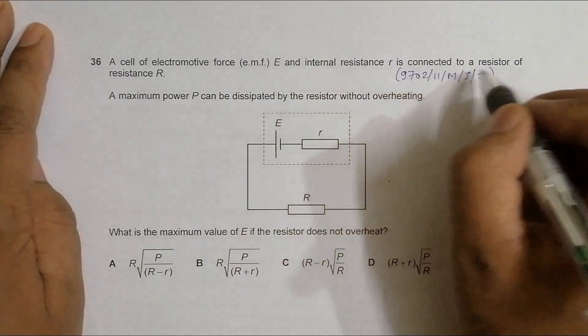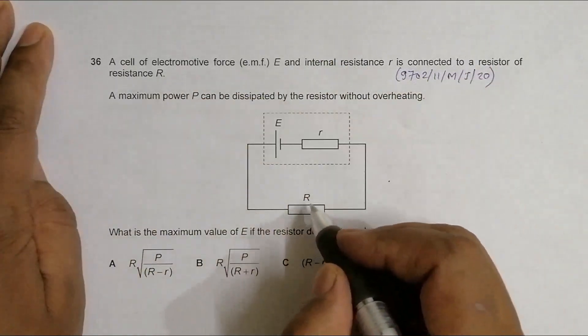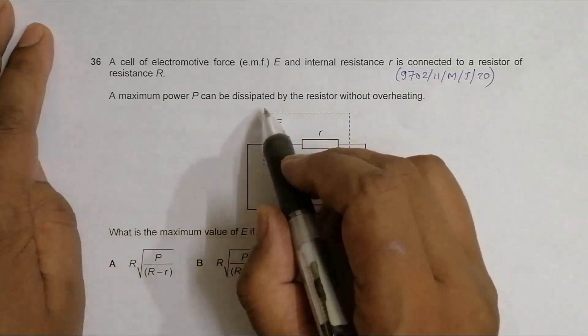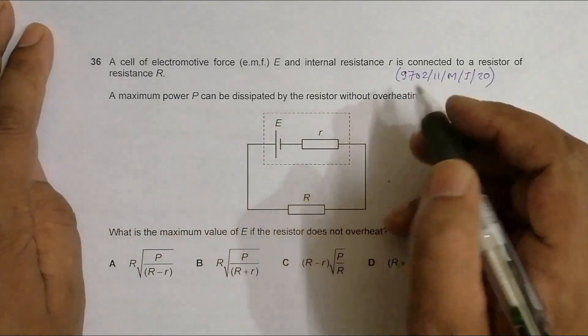The external resistance is denoted by large R and the internal resistance by small r. A maximum power P can be dissipated by the resistor without overheating. That is the safest power that it can manage.